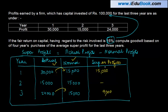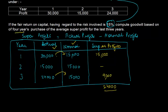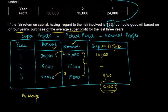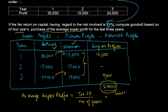Total super profits made over 3 years come to 24,000. We are told goodwill has to be calculated on 4 years purchase of the average super profits. So the average super profit is total super profit divided by number of years: 24,000 divided by 3 equals 8,000.